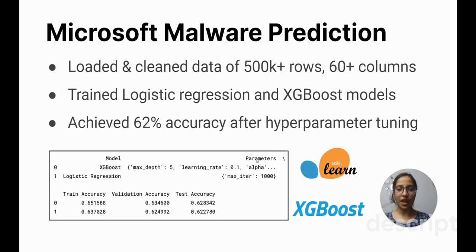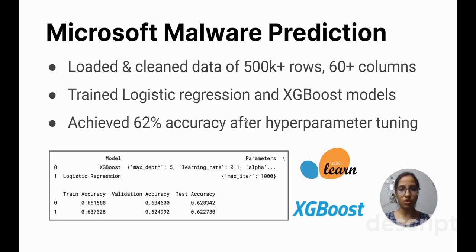The investigation revealed that Jammu and Kashmir had the highest number of fatalities, mainly due to battles. In another project, I worked with the Microsoft malware dataset comprising over 500,000 rows and 60 plus columns. It is a classification problem — my goal was to predict the presence of malware in the system. I trained logistic regression and gradient-boosted tree models using scikit-learn and XGBoost libraries, achieving an accuracy score of 0.62 on the test set after hyperparameter tuning.